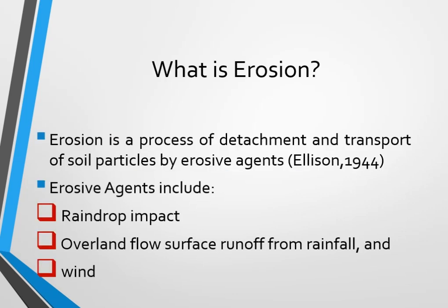Before that, we are going to understand what erosion means. Erosion is a process of detachment and transport of soil particles by erosive agents, as defined in 1944. There are a lot of erosive agents. The first one is raindrop impact, the second is overland flow or surface runoff from rainfall, and sometimes there is wind. Basically, raindrop impact and surface runoff are the main erosive agents for the formation of erosion.